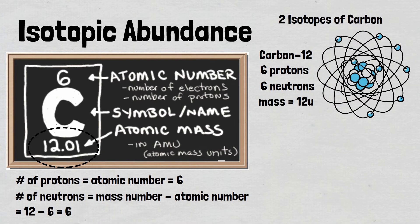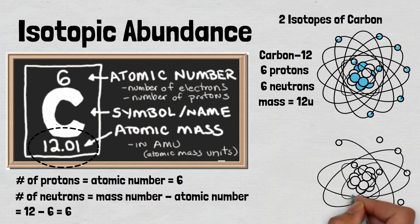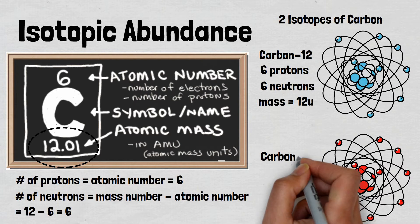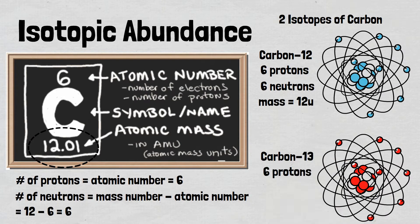We have two stable isotopes of carbon, carbon-12 and carbon-13. An isotope is simply an element with the same number of protons but different number of neutrons.